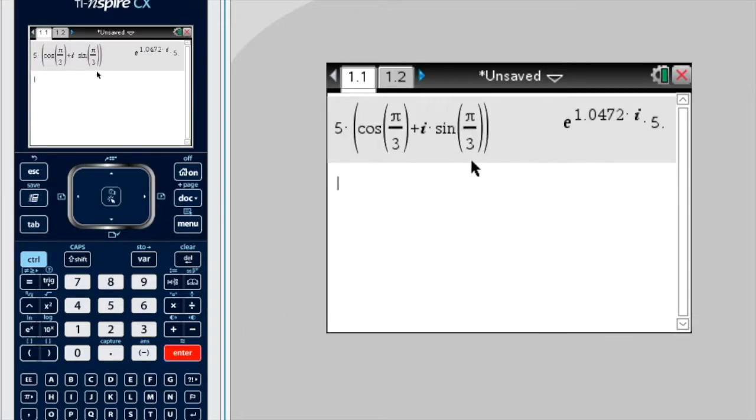So what they've done is they've accepted it as a, they interpret it as a Euler form, so the modulus is 5 here, and the angle is 1.0472, which must be the equivalent of pi on 3.